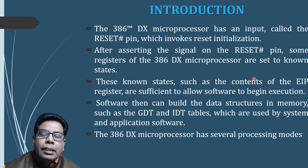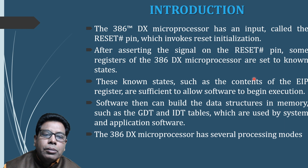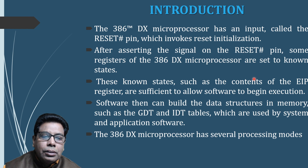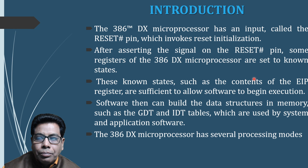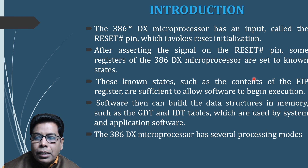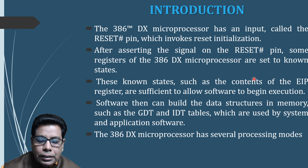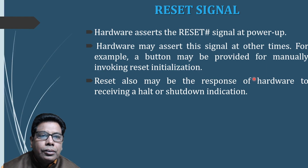Software can then build data structures in memory, such as the global descriptor table and interrupt descriptor tables, which are used by the system and application software. The 80386 has several processing modes and begins execution in a mode that emulates the 8086 processor — called real address mode. If protected mode is to be used, where the 32-bit instruction set is available, the initialization software changes the setting of the mode bit in the CR0 register.